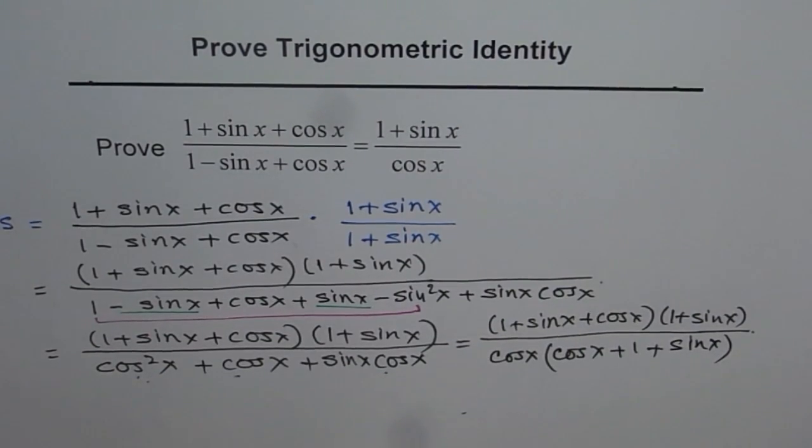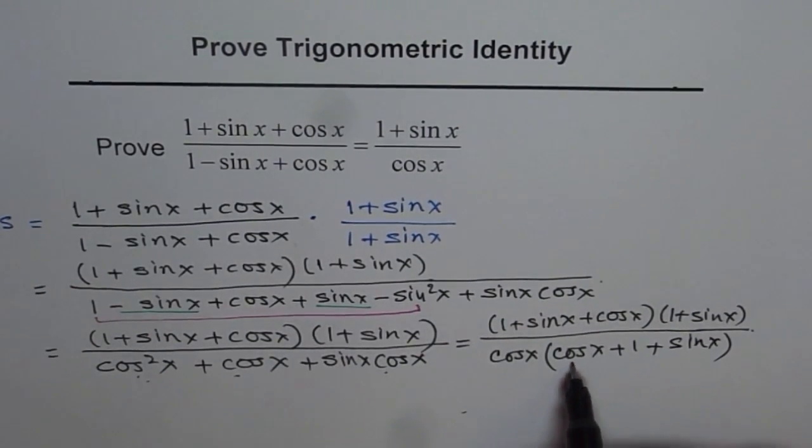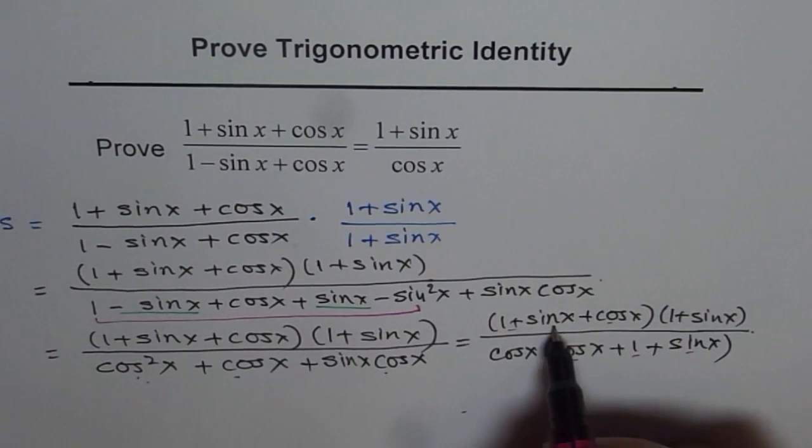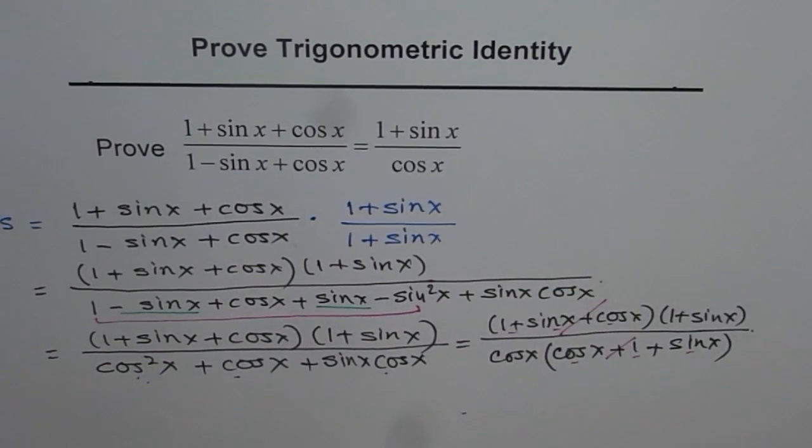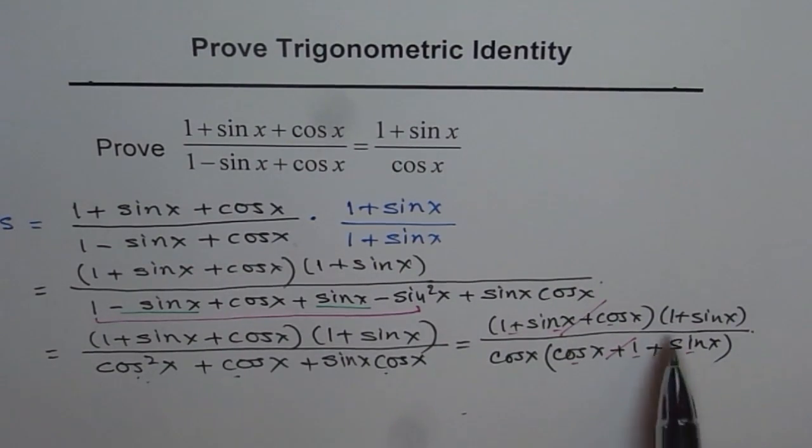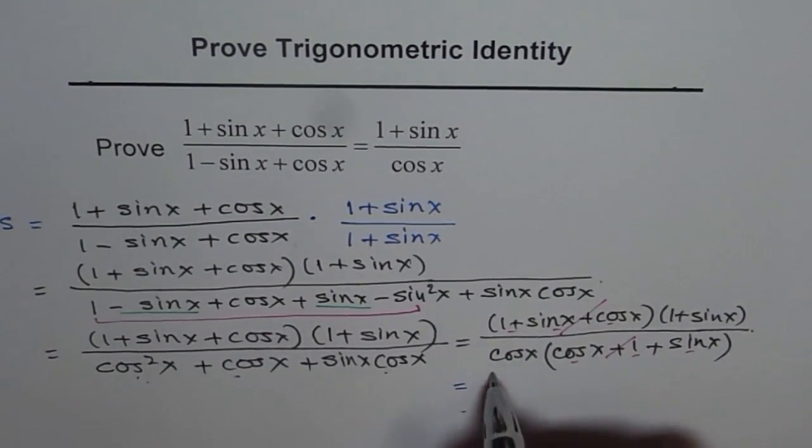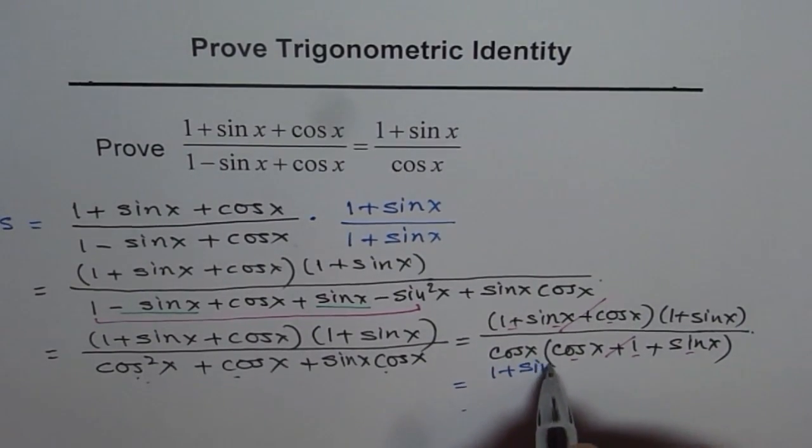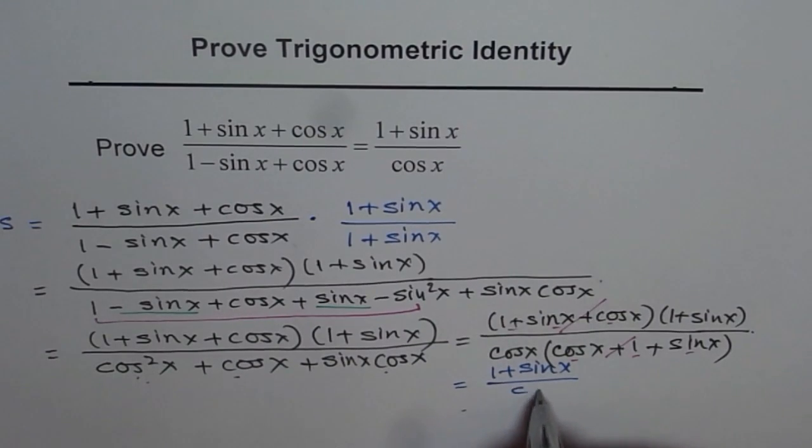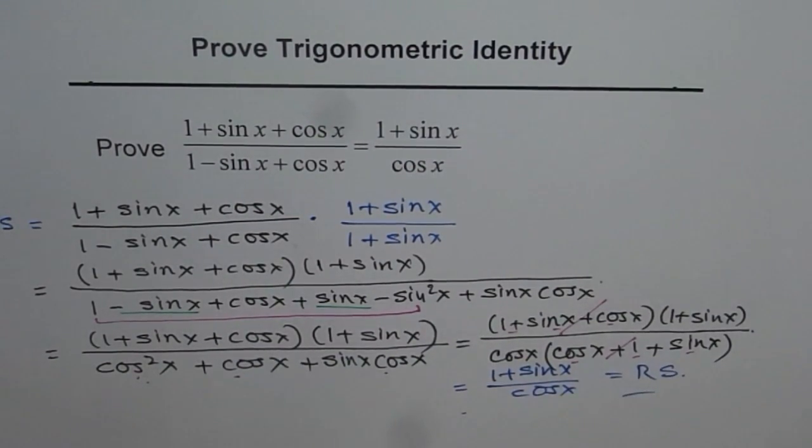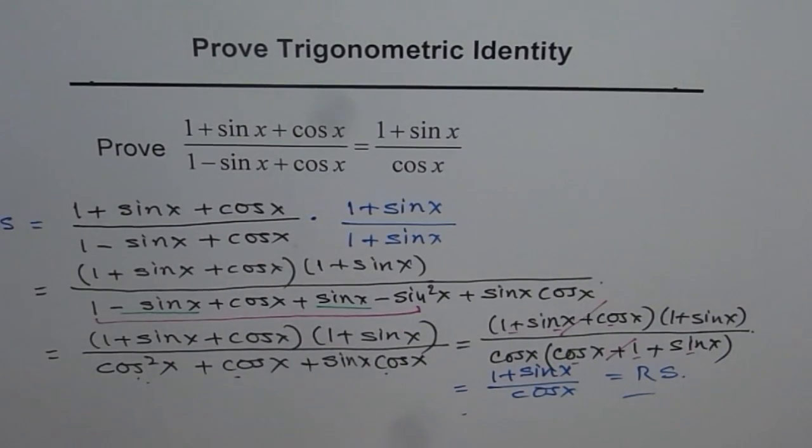Do you see a common factor there? (cos x + 1 + sin x). These factors cancel out. And what do you get? You get (1 + sin x) divided by cos x, which is the right side. Therefore, the identity has been proven.